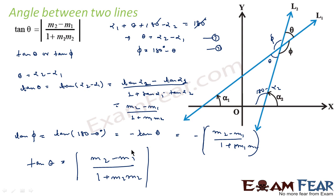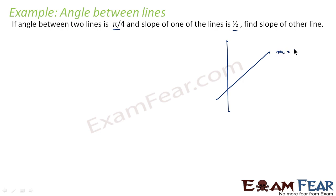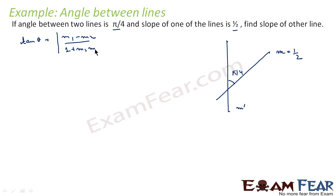Let's take one example on angle between lines. The question says: if the angle between two lines is pi by 4 and the slope of one line is 1 by 2, find the slope of the other line. Let's draw the lines — one line has slope equal to 1 by 2, and the other has slope m dash, which is not given. The angle between these lines is pi by 4. We already know that tan theta equals mod of (m1 minus m2) by (1 plus m1 m2).